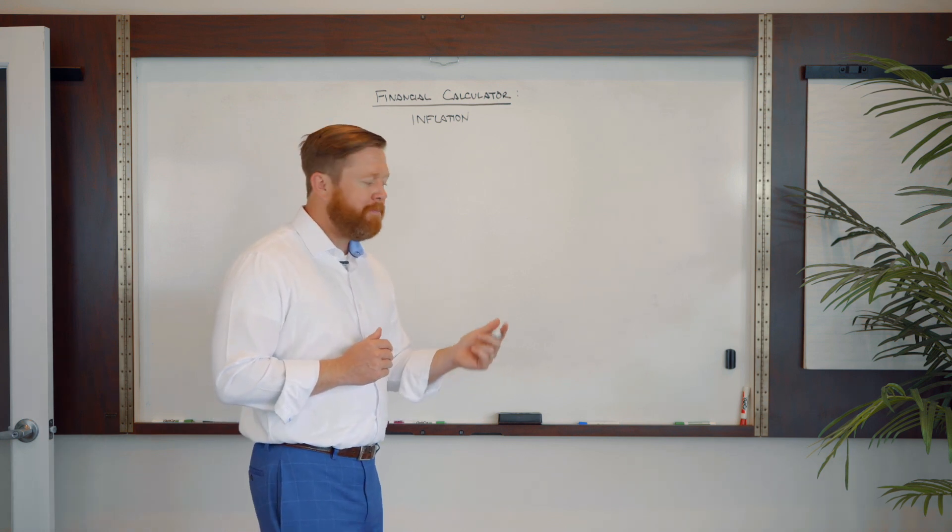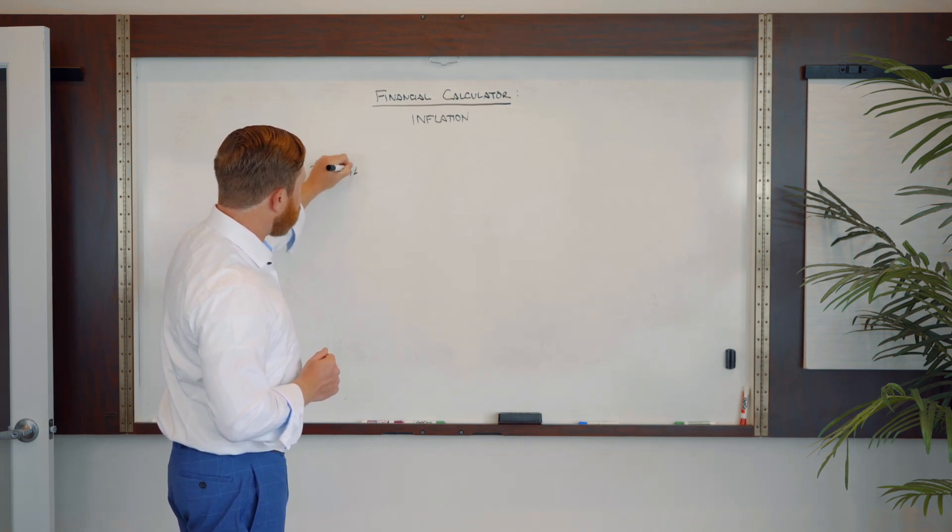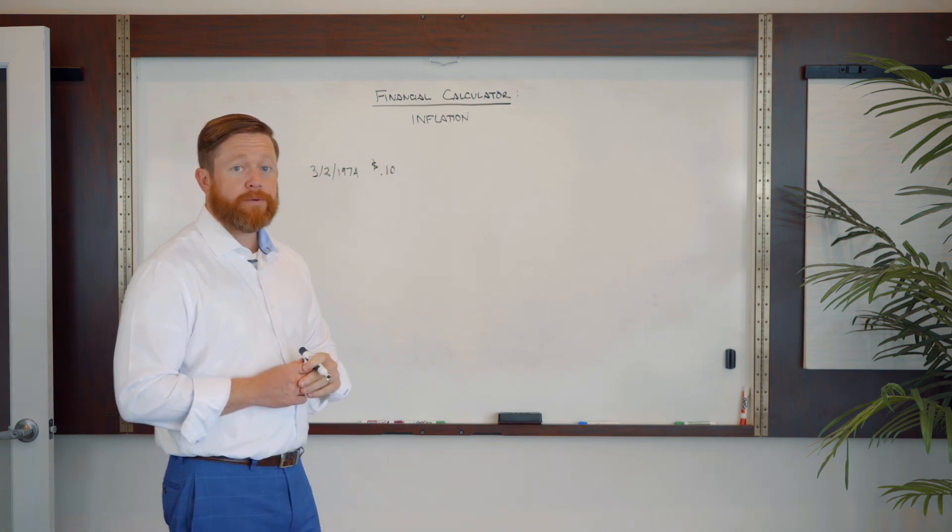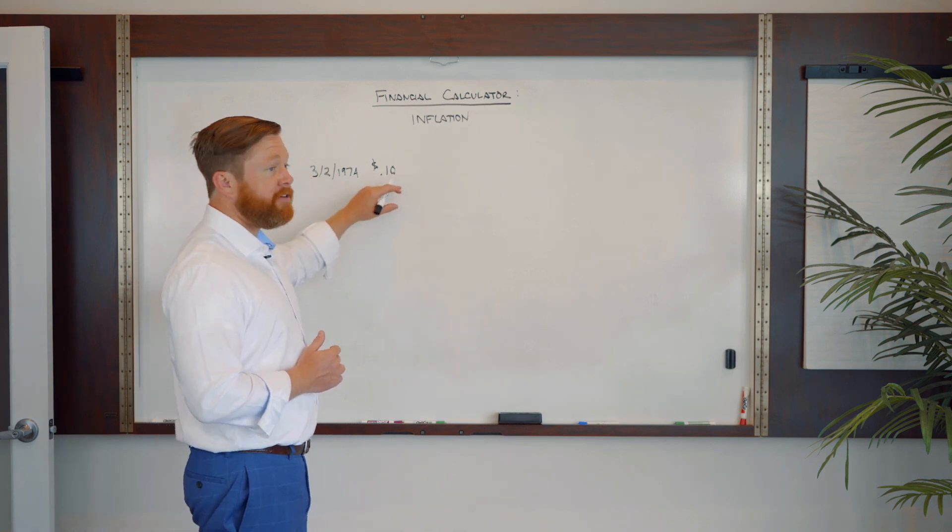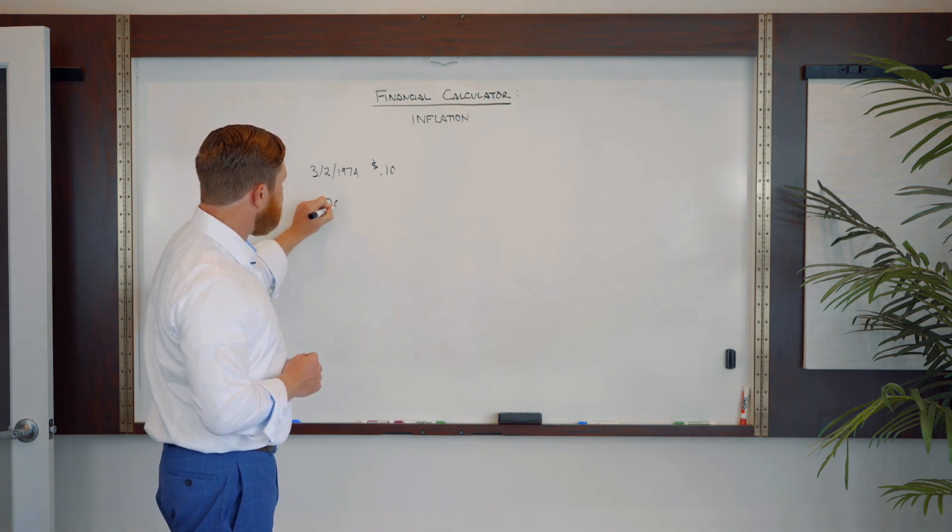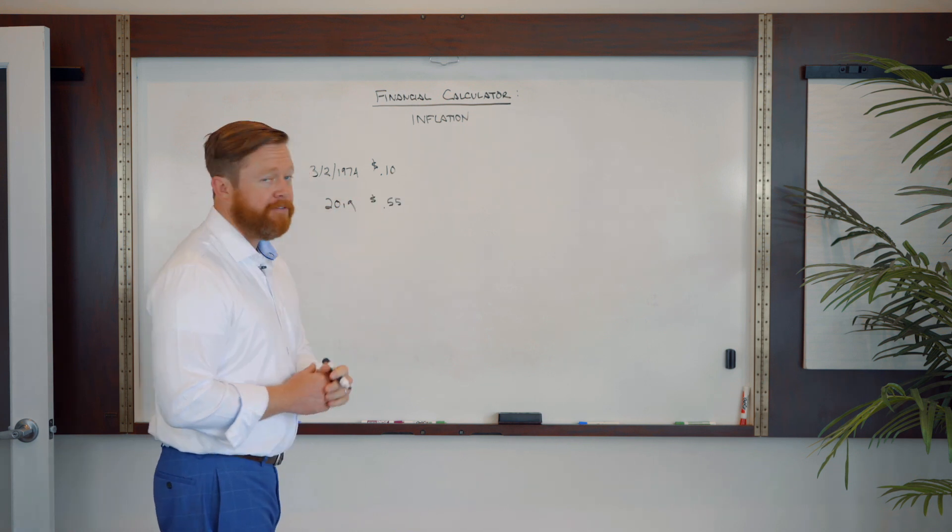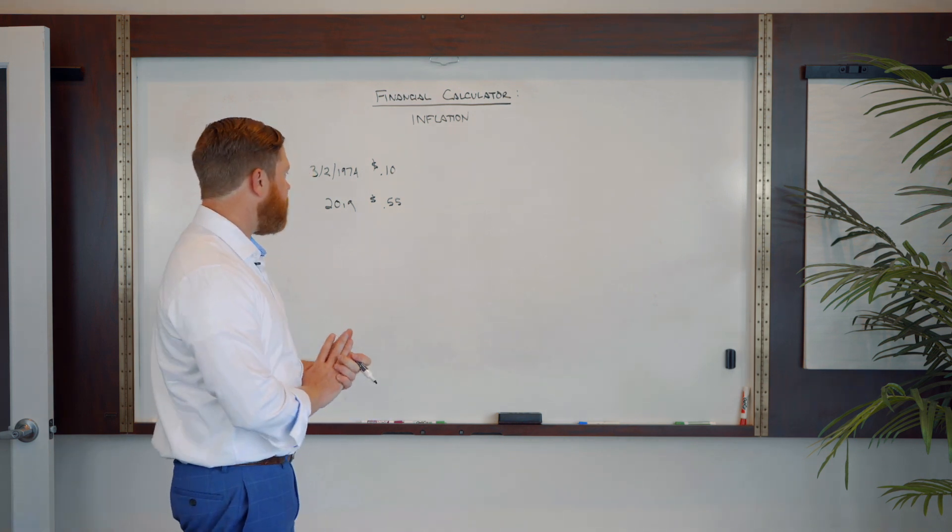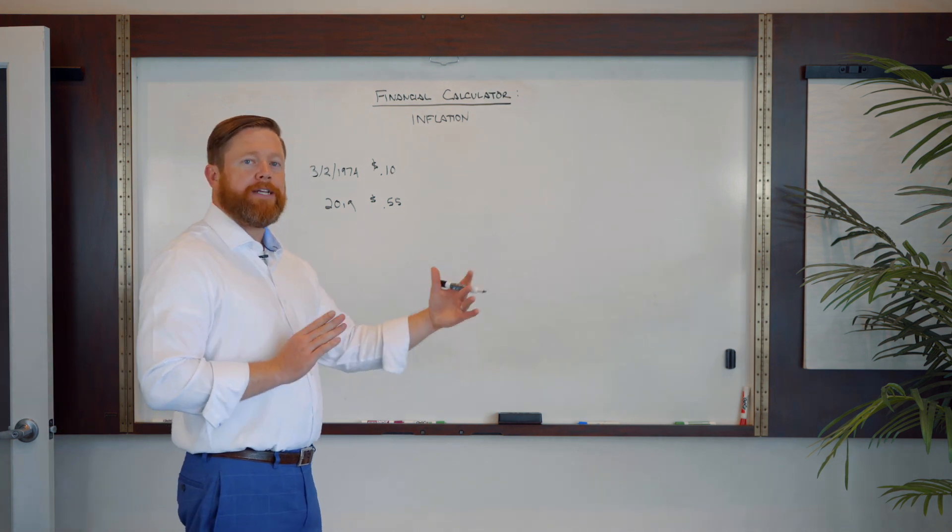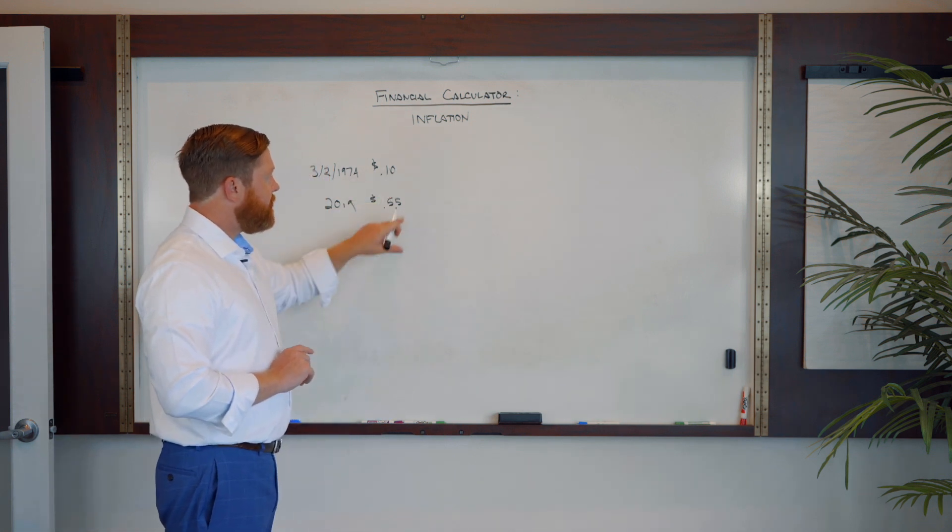If we go all the way back to March 2nd, 3-2 of 1974, you can see that it was 10 cents. So 0.10 is going to be what we're going to look at as our present value if we rewind back to 1974. And if we go to just last year in 2019, we saw it jump all the way to 0.55. So 55 cents is now what it costs to send that first ounce of letter. We're going to look at that as the future value. Even though that's today, we're trying to calculate the historic inflation rate or interest rate to go from 10 cents to 55 cents.